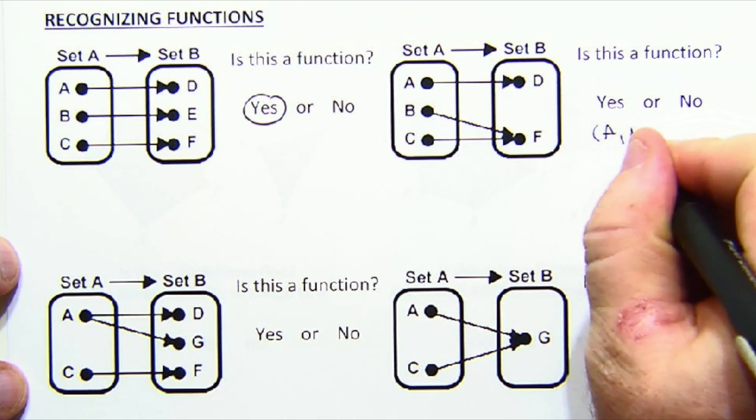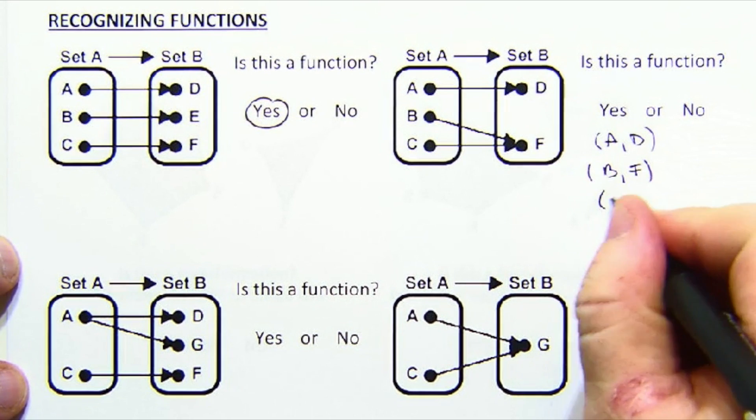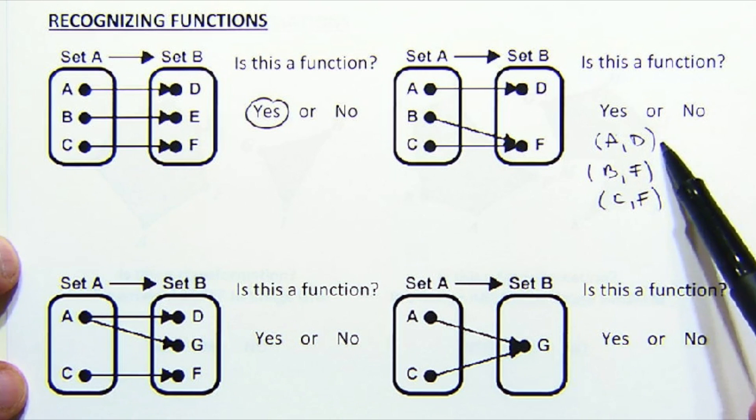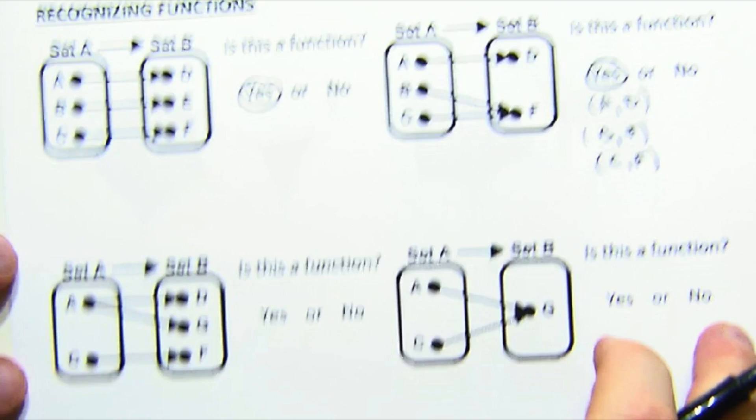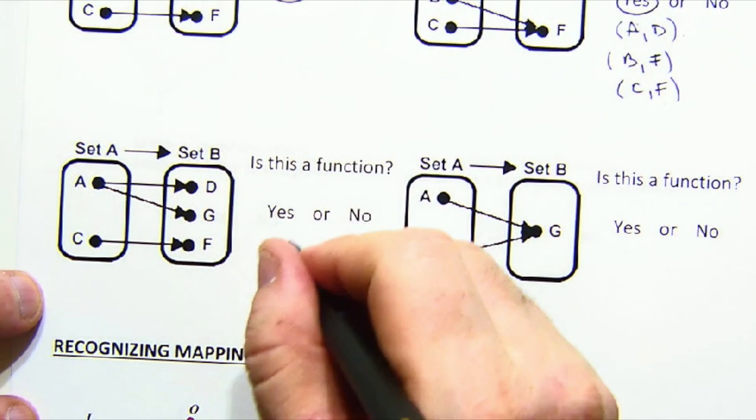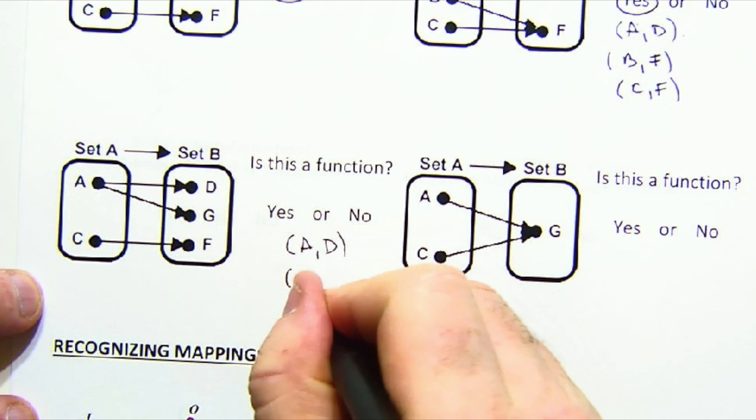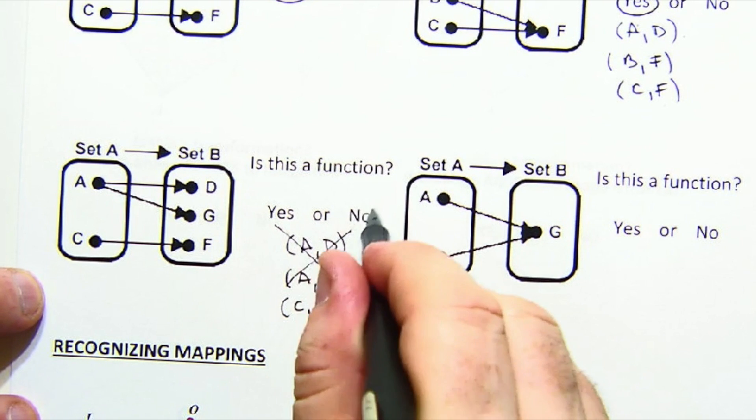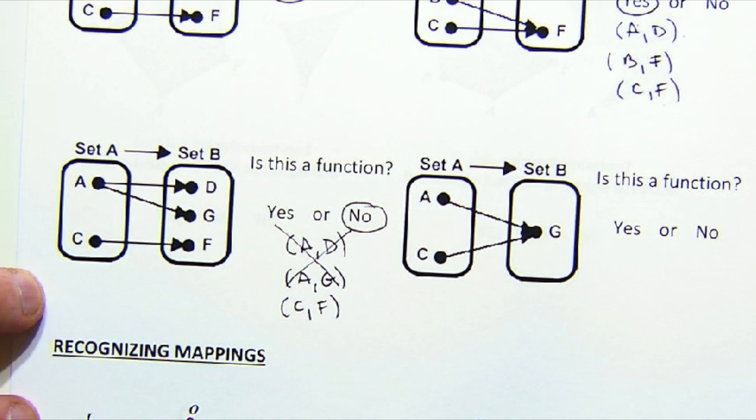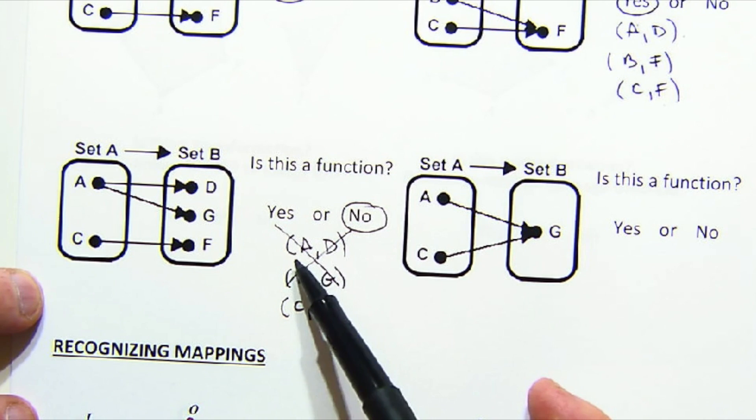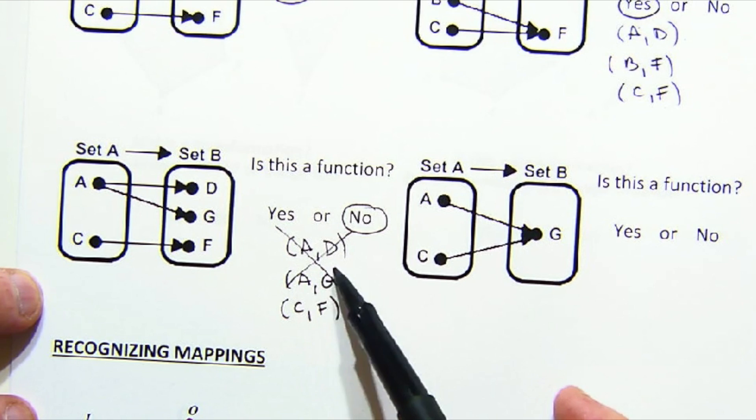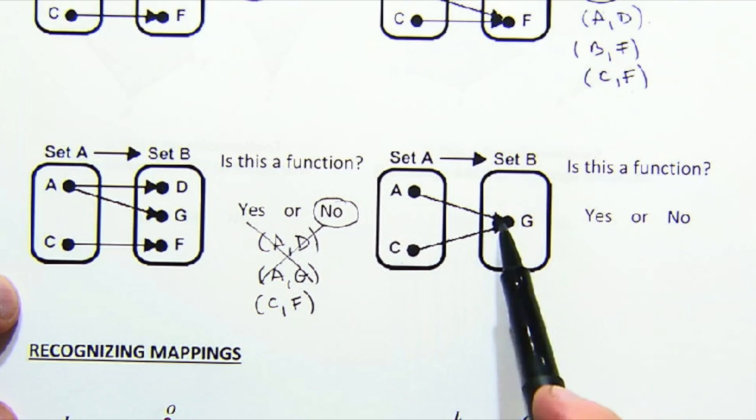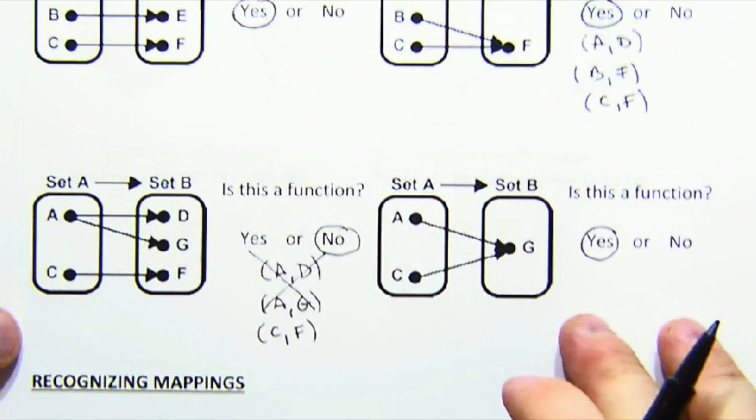So let's look at that. A went to D, B went to F, and C went to F. Each item in the domain got assigned an item in the range. This is a function, yes. All right, here we have A going to D, A going to G, and C going to F. Here's a bad situation because A got doubly assigned, and the rule is one value for each domain item. A got two values, A B and A G.